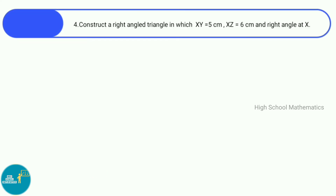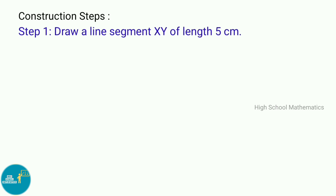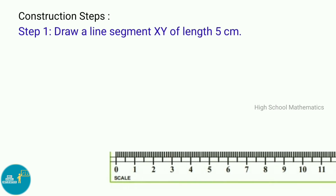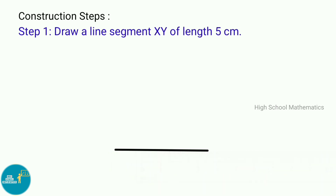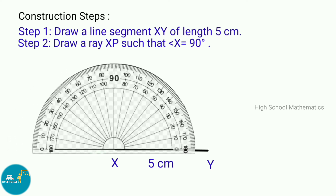Fourth sum: Construct a right angle triangle in which XY equal to 5 centimeters, XZ equal to 6 centimeters, and right angle at X. Construction steps — Step 1: Draw a line segment XY of length 5 centimeters. Step 2: Draw a ray XP such that angle X equals 90 degrees.